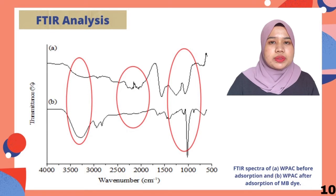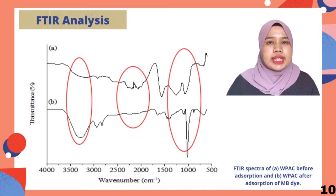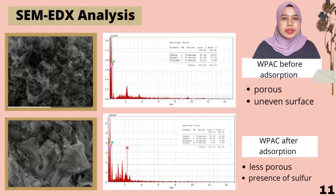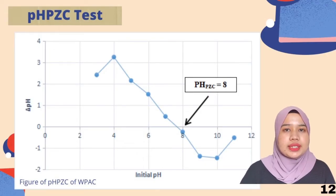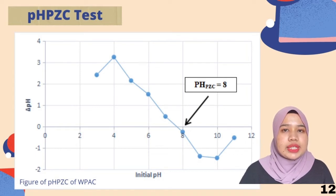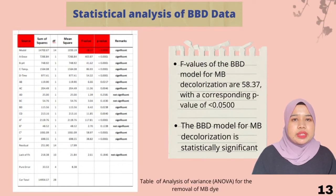Graph A shows that before adsorption, the watermelon peel activated carbon FTIR spectrum is quite complex. After MB adsorption, Graph B indicates a shift in the functional groups and new peaks appear, suggesting that functional groups are involved in the adsorption process. Before adsorption, the watermelon peel activated carbon surface was uneven and porous with numerous cavities and cracks. After adsorption, the surface becomes less porous and there is presence of sulfur from MB dye. At pH above pH-PZC, the surface of the absorbent is negative, while at pH below pH-PZC it is positive. The pH-PZC value of watermelon peel activated carbon was 8.